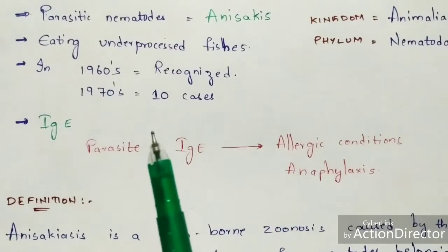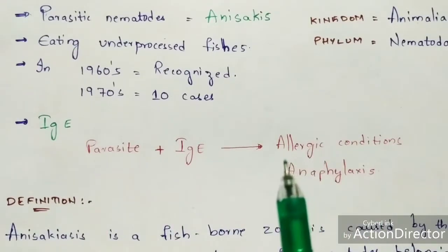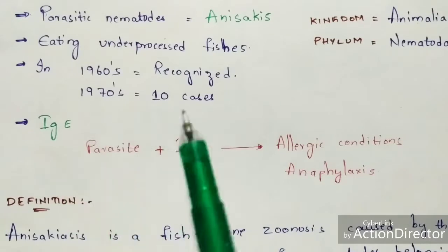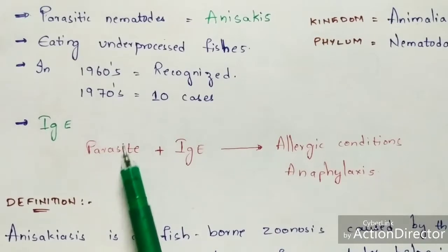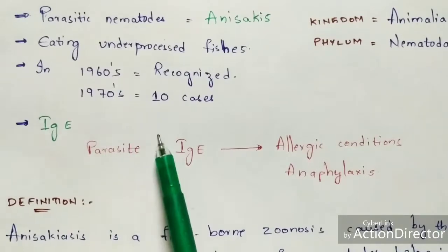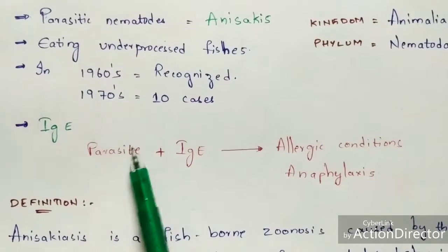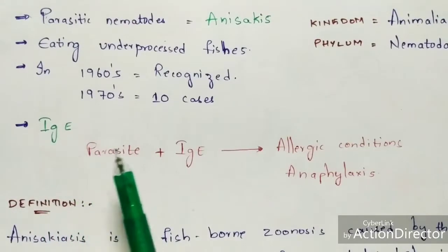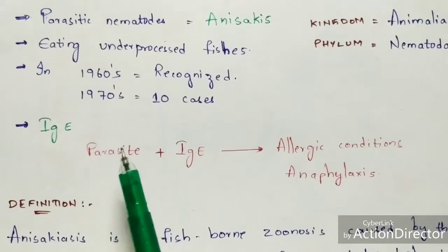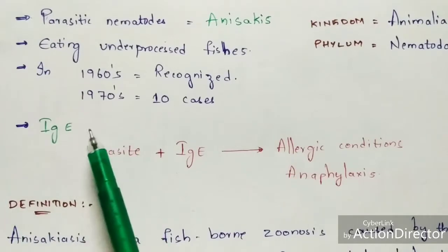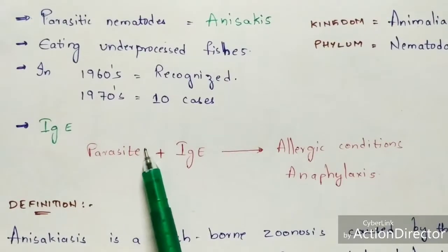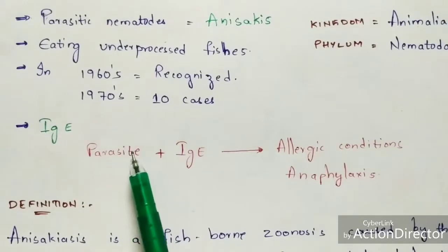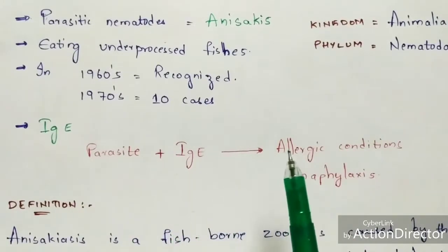When a person gets infected with anisakiasis, the immune system responds. Foreign antigens - in this case the parasite - enter the body from the external environment. The body immediately produces antibodies against those antigens. The type of antibody produced is IgE, that is immunoglobulin E, which is produced against the parasite. When these antibodies are produced against the parasite antigen, it causes allergic conditions.